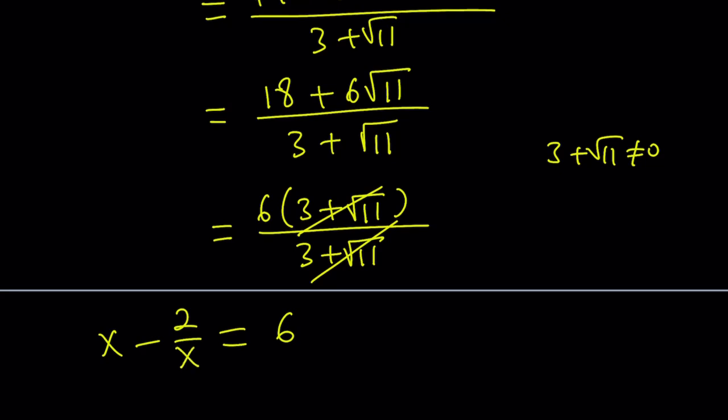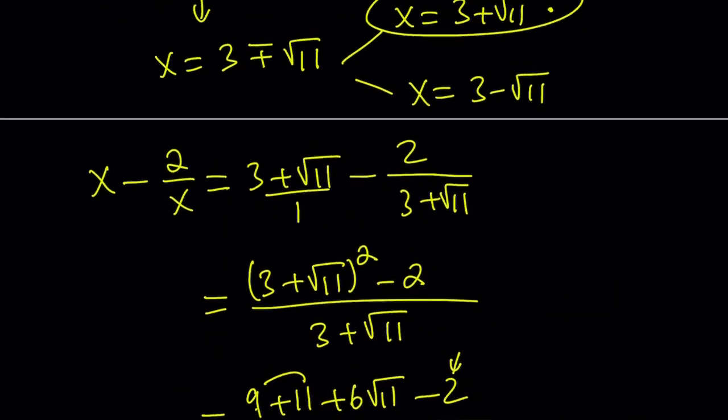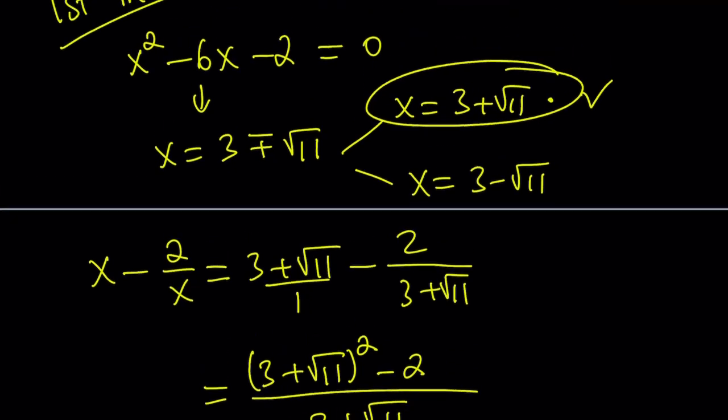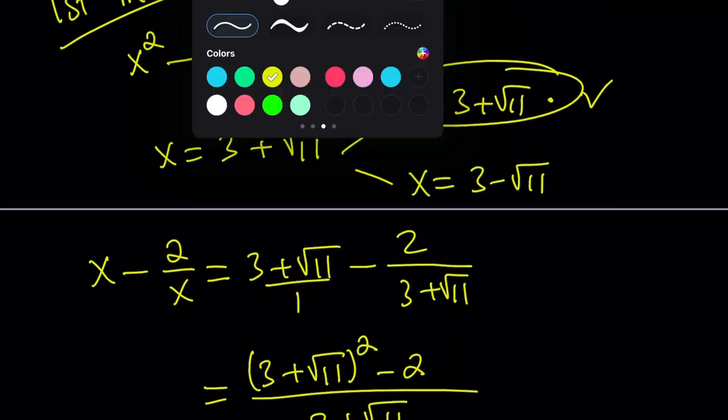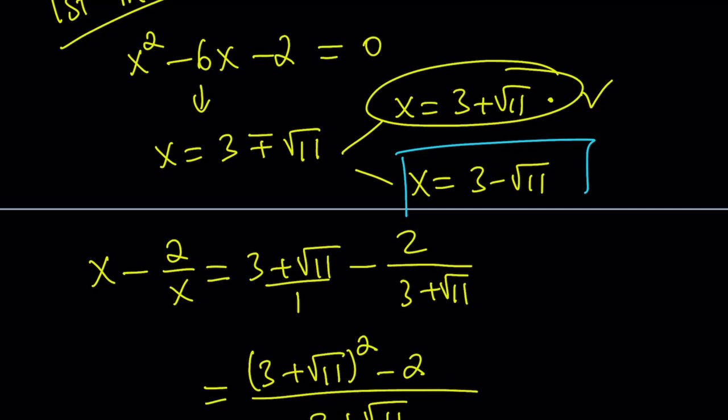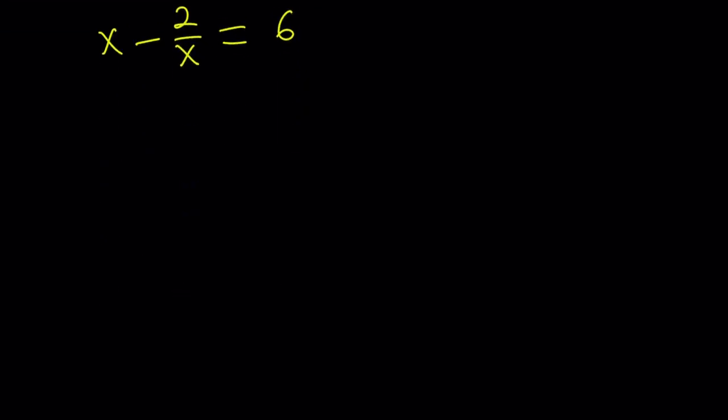Remember, we started off with x equals 3 plus root 11. Now we're going to go ahead and use the other solution, 3 minus root 11. So what happens if x is 3 minus root 11? Let's go ahead and substitute that x value into our expression.